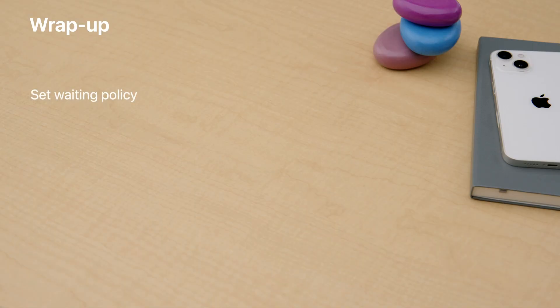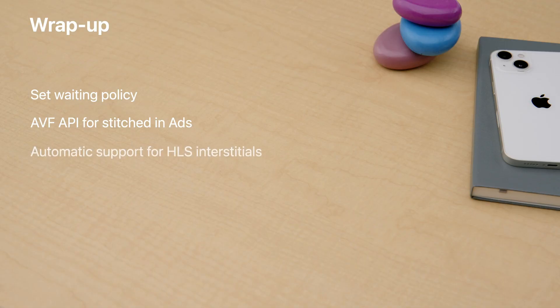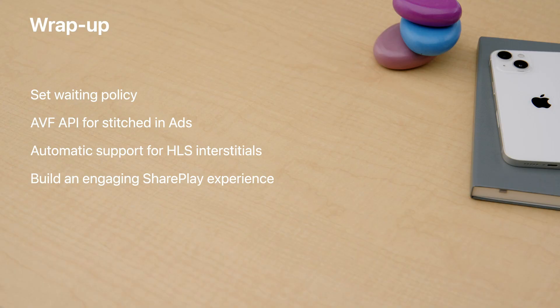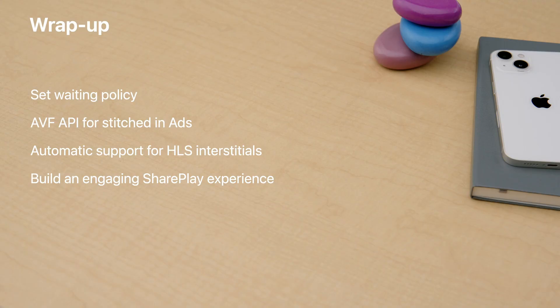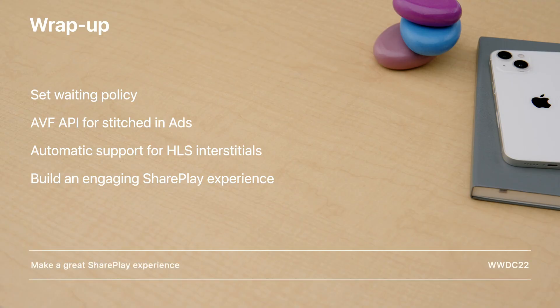To wrap up, in order to schedule ads and other interstitials during coordinated playback, all you need to do is specify the waiting policy. And if you have stitched-in ads, you can set their time ranges on the playback coordinator using the AVFoundation API. Or you could use HLS interstitials to let AVFoundation manage the playback of ads. The ideal scenario would involve all participants watching the same content. You could have a premium subscriber tier that receives no ads, and participants receiving ads of different durations. In scenarios such as these, your premium subscribers don't have to be staring at a waiting screen — you could show them some interesting content, or build other experiences to keep them entertained. For more ideas on how to build custom experiences in SharePlay, check out the Make a Great SharePlay Experience doc. Hope you found this session informative. Enjoy the rest of WWDC. Thank you.